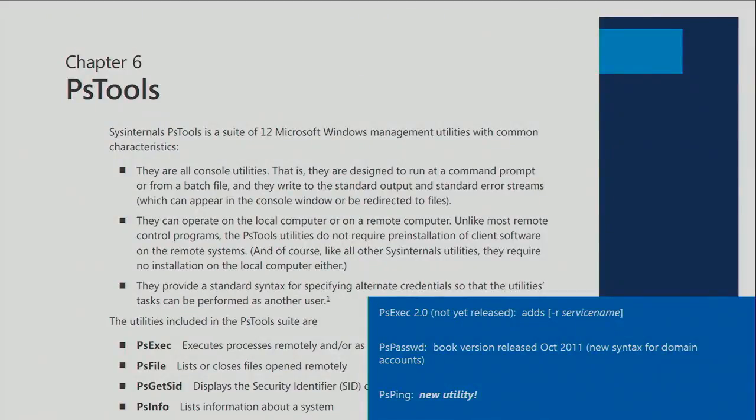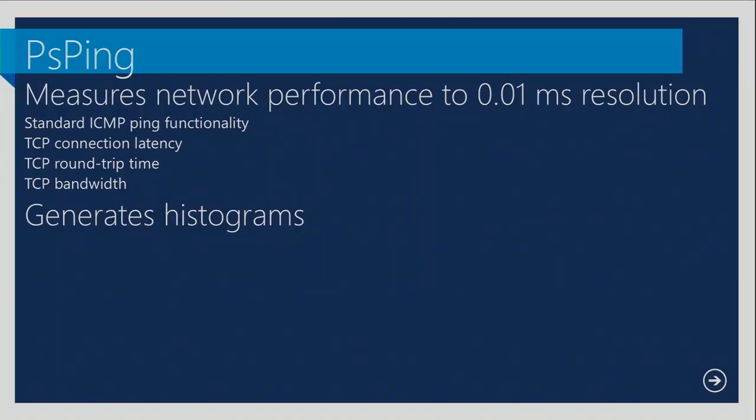PSPassword is another one to mention. The book is accurate and complete, but PSPassword didn't work well enough for domain accounts, so it has a completely different command line syntax than it used to have. The correct version didn't actually get released until several months after the book came out — that's the only reason I want to mention that. A new utility in the PS Tools suite not in the book at all is PSPing. Has anyone heard of it? Hardly anyone. Everyone knows what ping is — it uses the ICMP protocol to query remote systems and find out if they're listening and responding.